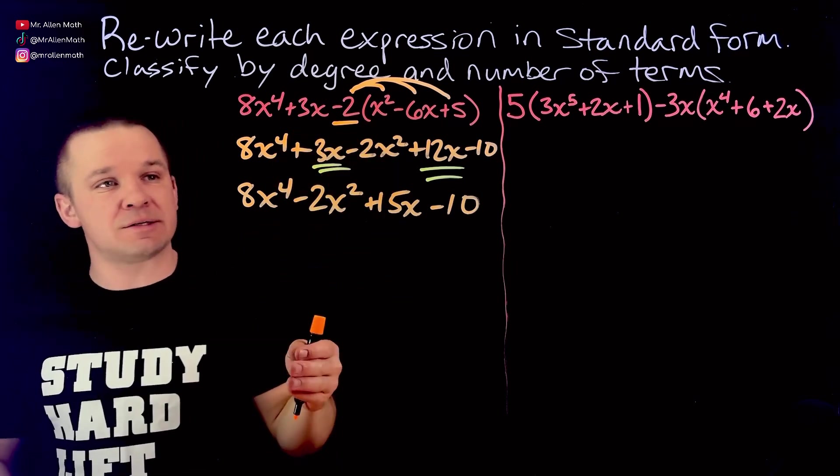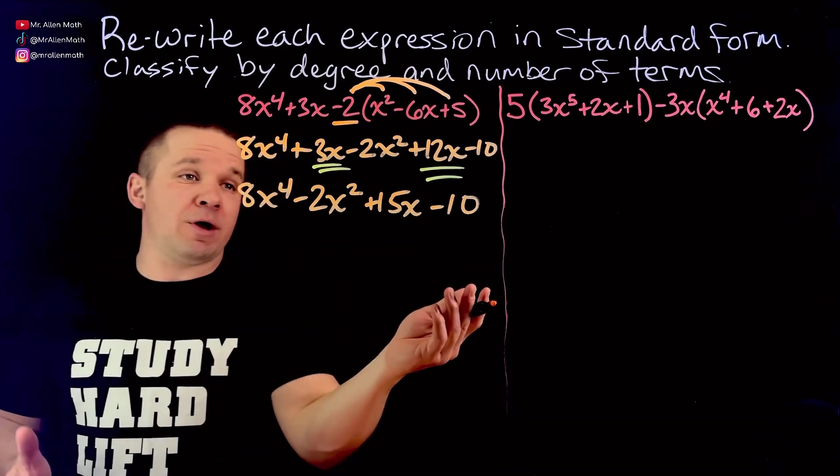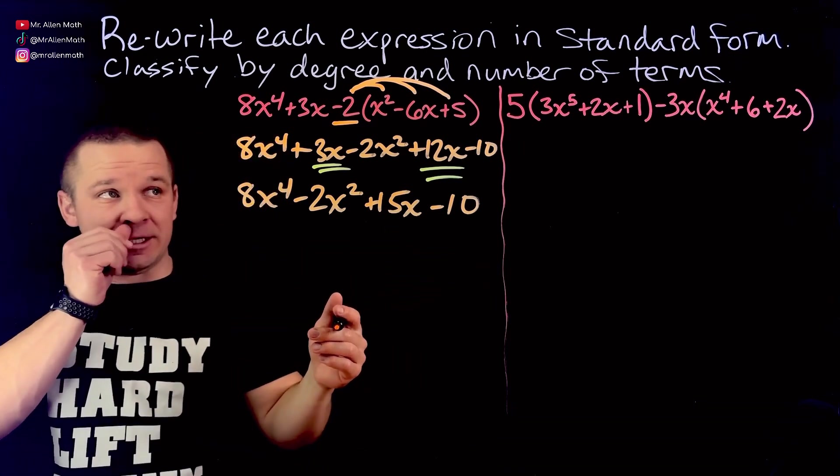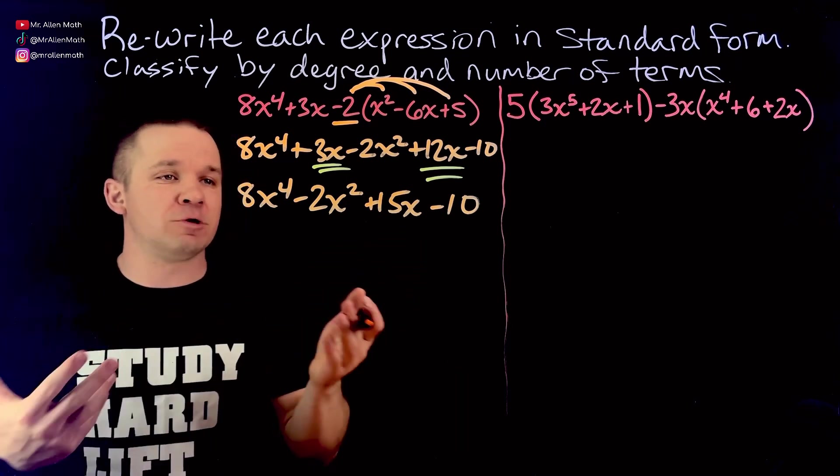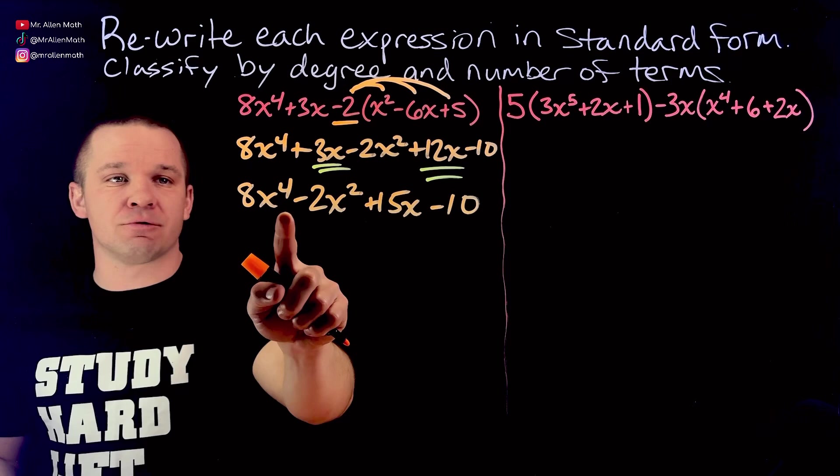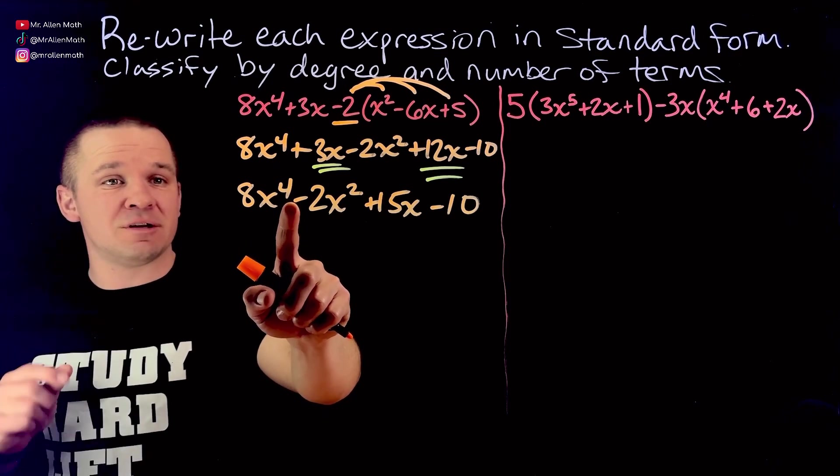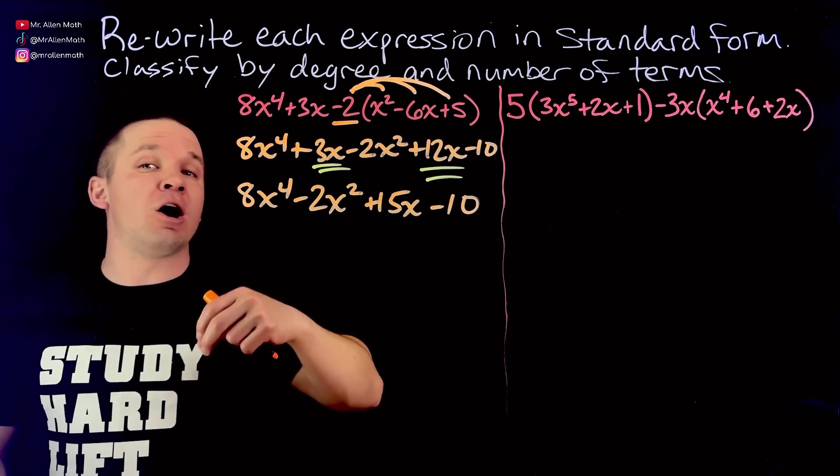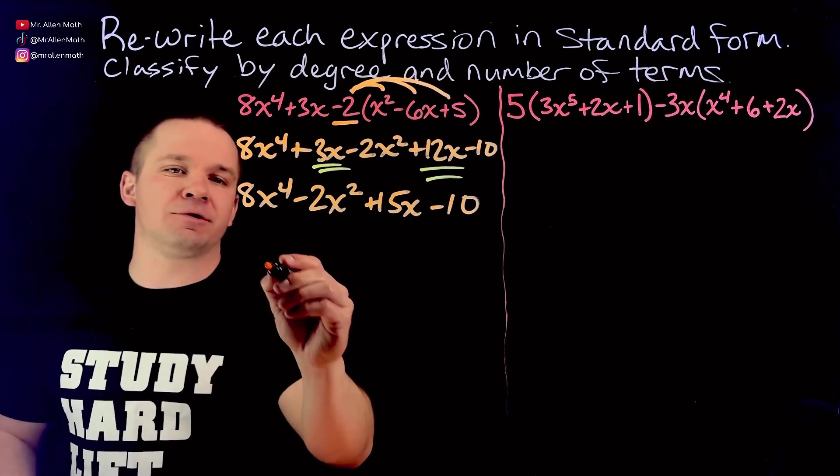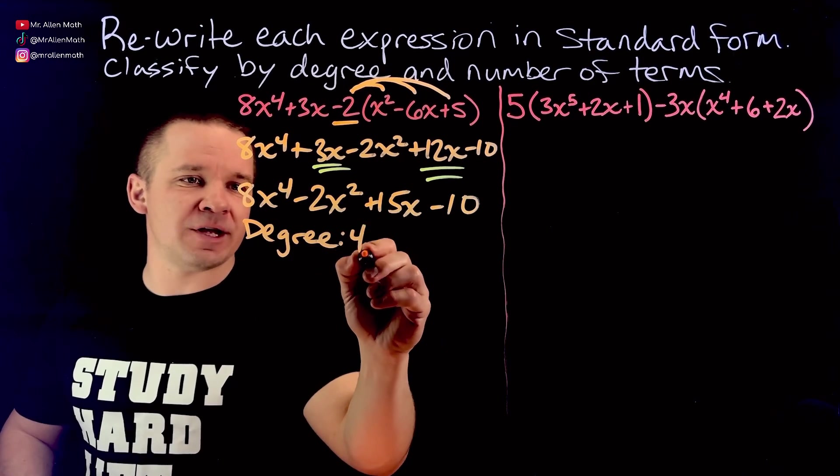I only see two like terms on this one which would be the 3x and the 12x. Nothing else is a like term because there's no other x to the fourths, no other x squareds and no constants like that 10. So we'll start with our highest degree here, that's how we write it in standard form aka descending order. I'm gonna have 8x to the fourth.